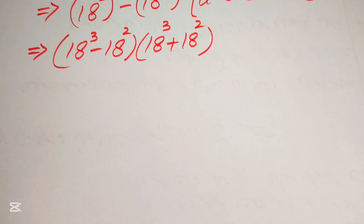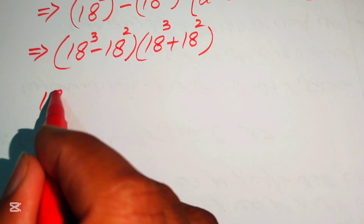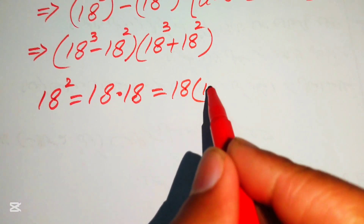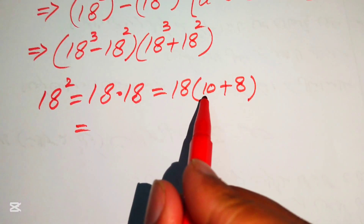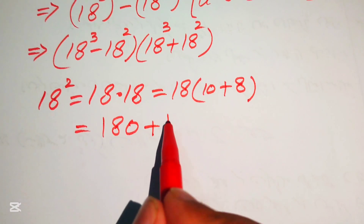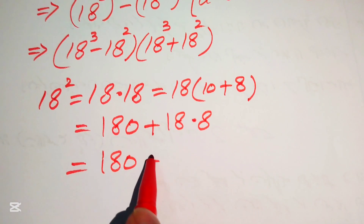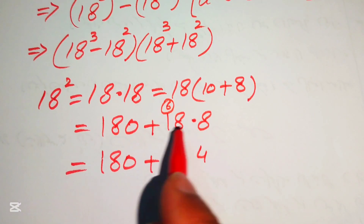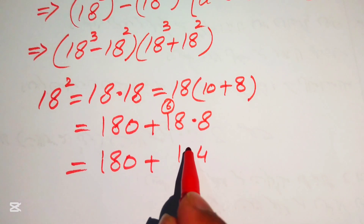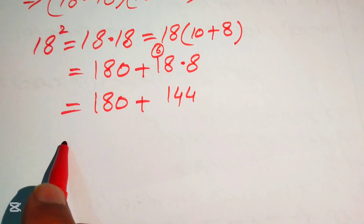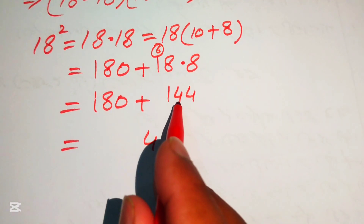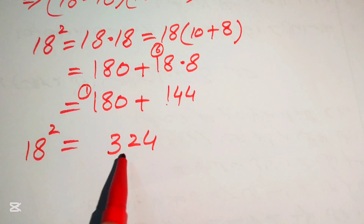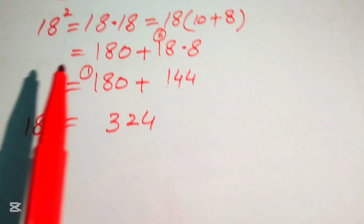First we find the value of 18 squared. We write 18 squared equals 18 multiplied by 18, and we break 18 as 10 plus 8. 18 times 10 equals 180, and 18 times 8: 8 times 8 is 64 — write 4 carry 6; 8 ones are 8, plus 6 is 14 — giving 144. Summing: 180 plus 144 — 0 plus 4 is 4, 8 plus 4 is 12 write 2 carry 1, 1 plus 2 plus 1 is 3 — so 18 squared equals 324.